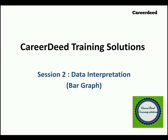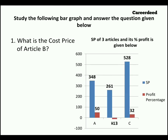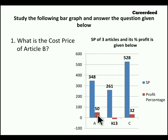Hello everyone, welcome to Karadid Training Solutions. Myself Mohan and we are at session 2 of DI. In the previous video we discussed about a DI problem on pie chart. In this session we are about to learn problems based on bar graph. Here you have a typical problem on bar graph which is based on the profit and loss concept. You have a bar graph illustrating selling price and profit percentage of three articles A, B, and C. Numbers mentioned in blue is selling price and numbers in red is profit percentage.